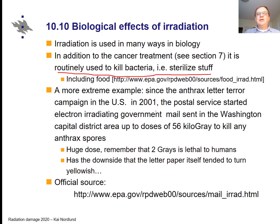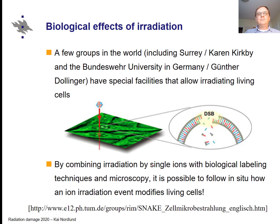An extreme example of sterilization: when letters containing anthrax were sent to government officials in the US in 2001, the postal service started electronically irradiating all government mail in the Washington area to quite high doses to kill any anthrax spores. This worked, though the downside was that letters tended to turn yellowish because of the high radiation dose used.